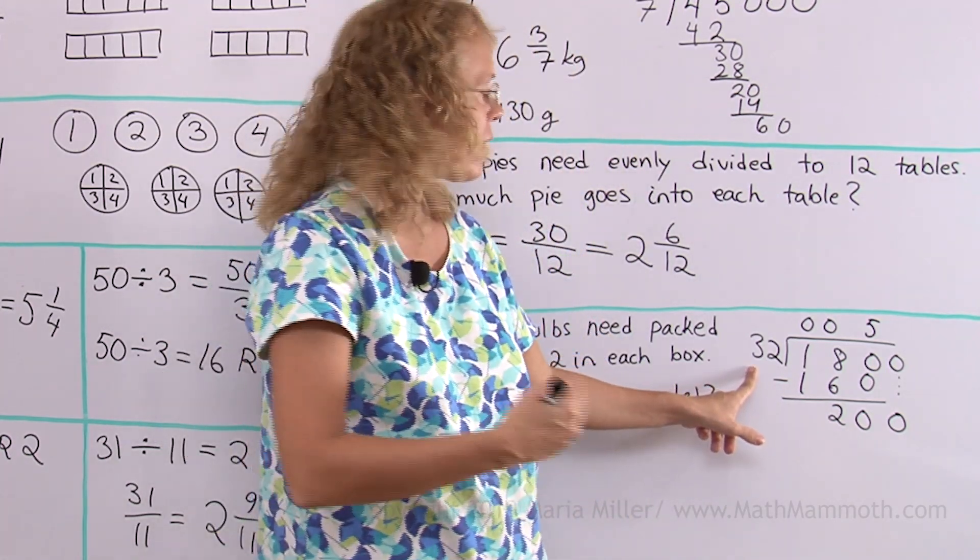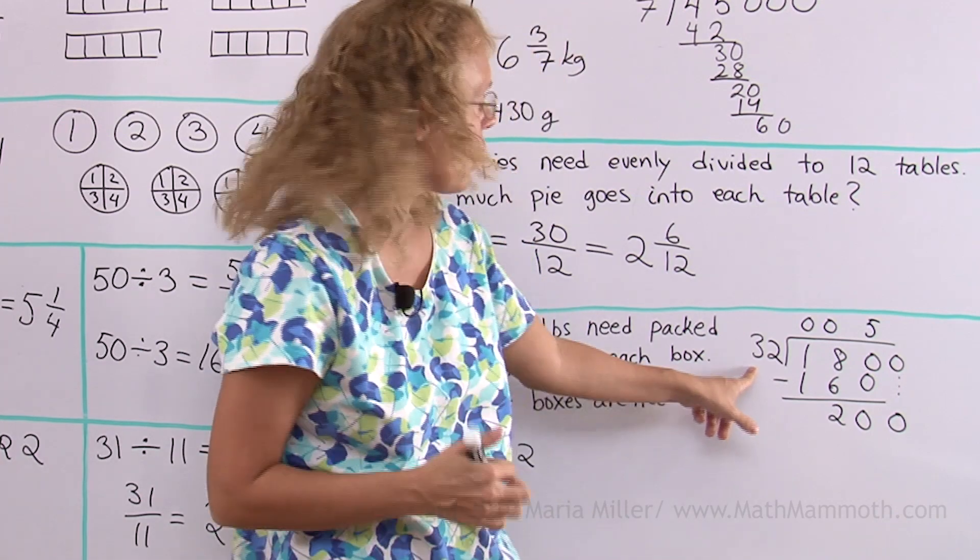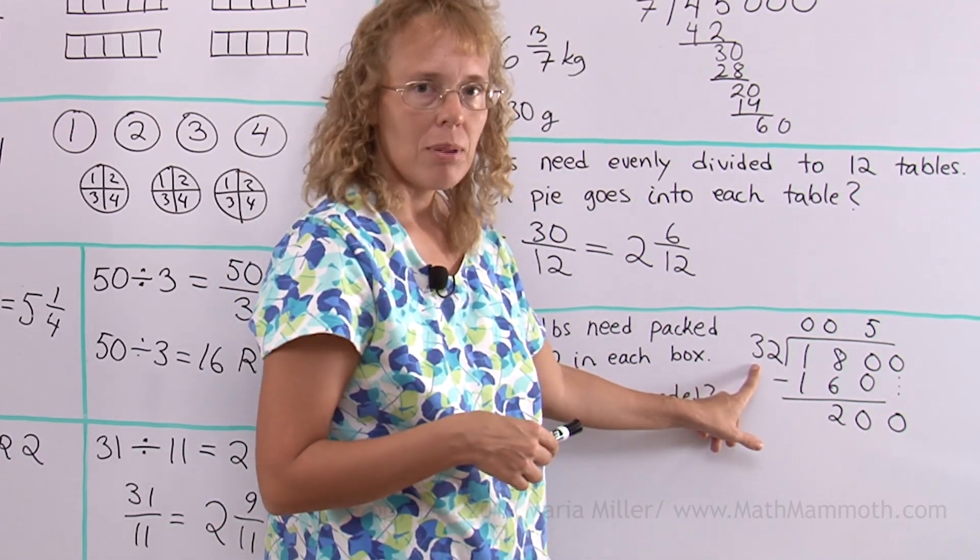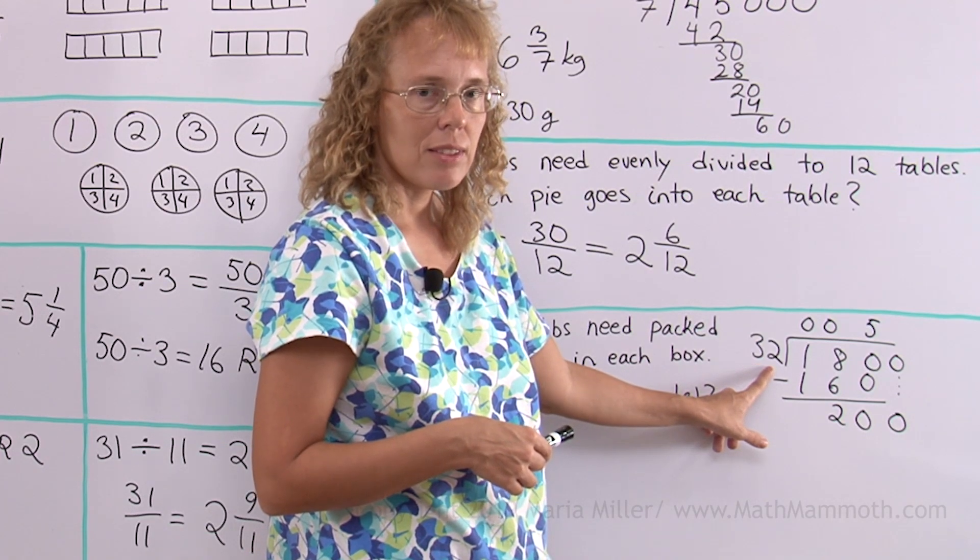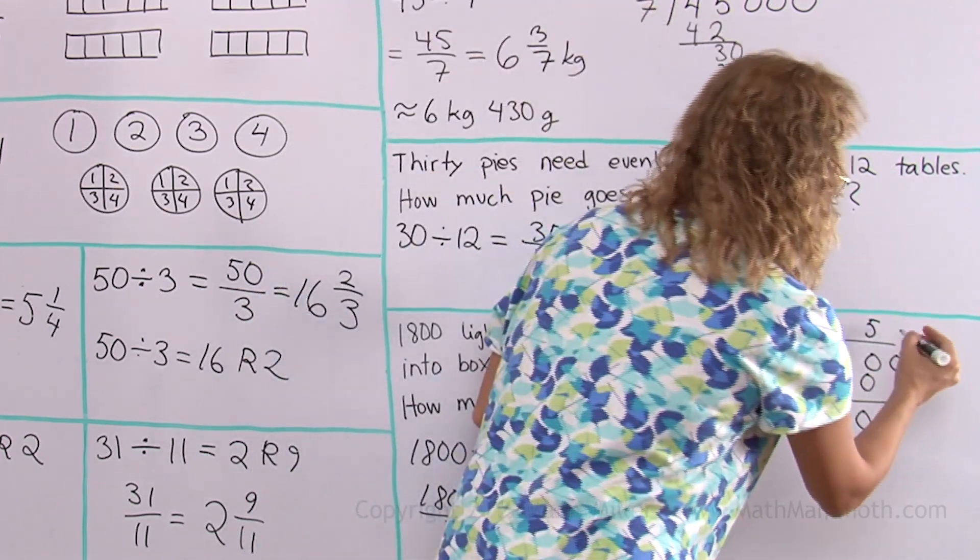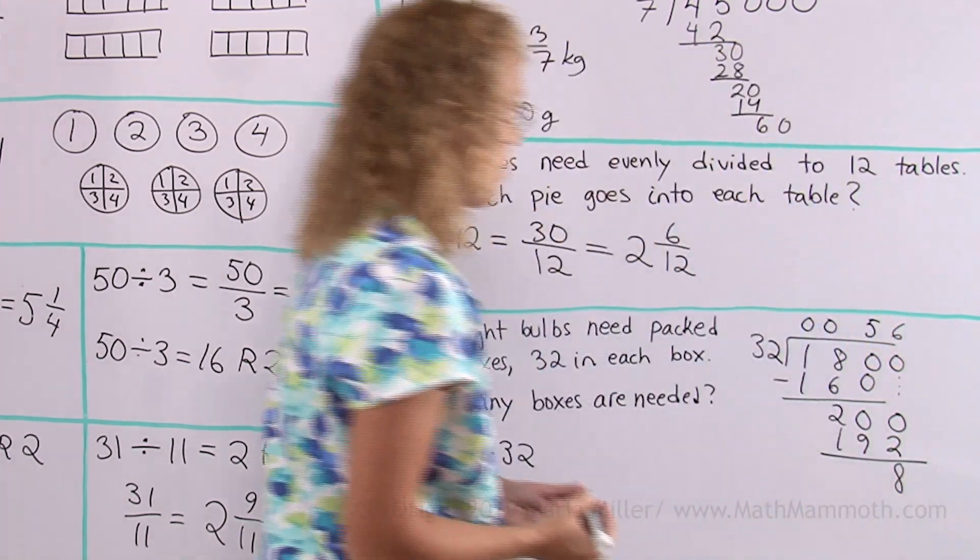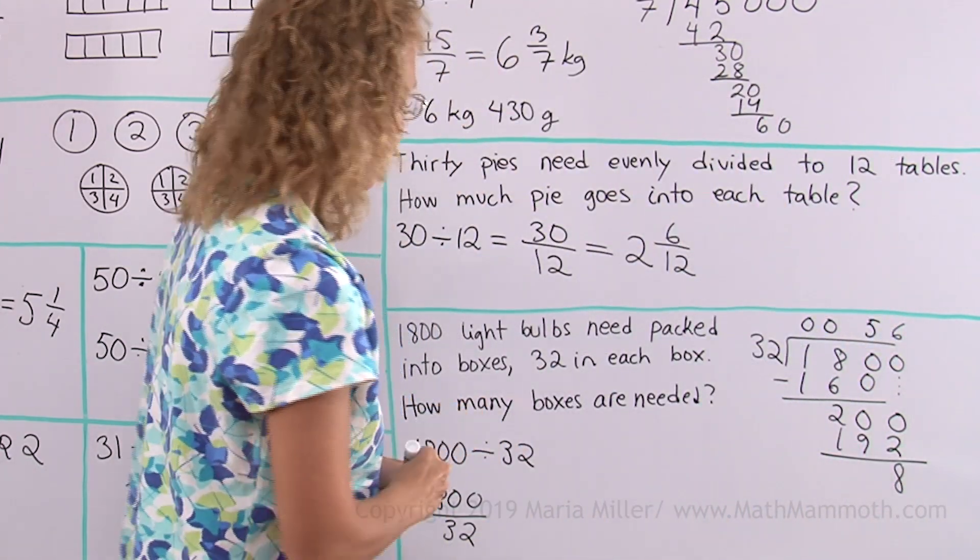Okay, six times 30 is 180, so I'll guess six times. Six times 32 is 180 plus 12. That's 192. Yeah, exactly six times. And here's my remainder.